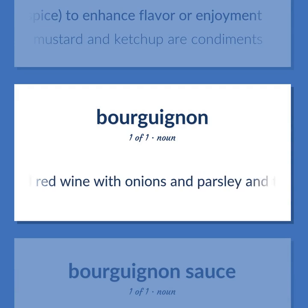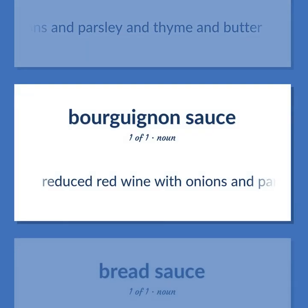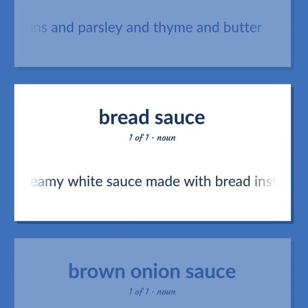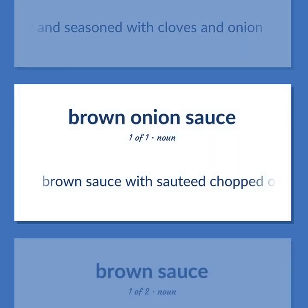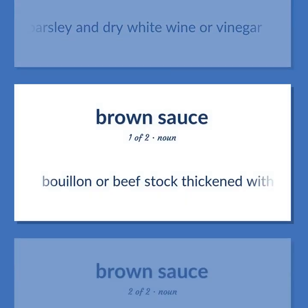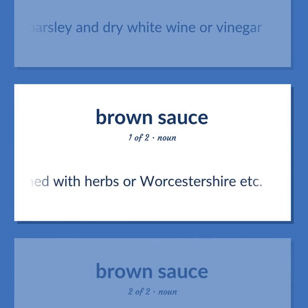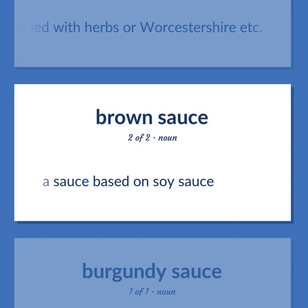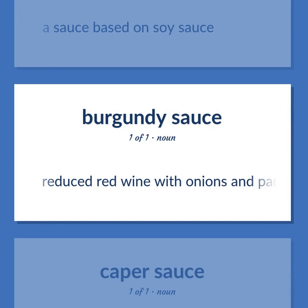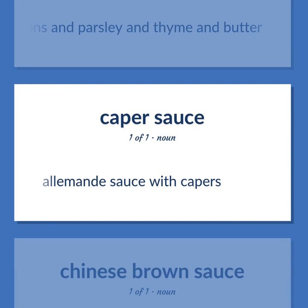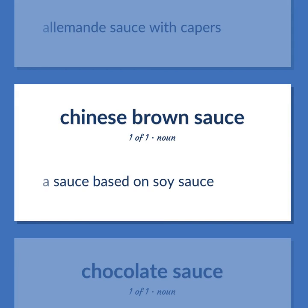Sauce types: Reduced red wine with onions and parsley and thyme and butter. Creamy white sauce made with bread instead of flour, seasoned with cloves and onion. Brown sauce with sautéed chopped onions and parsley and dry white wine or vinegar. Bouillon or beef stock thickened with butter and flour roux, variously seasoned with herbs or Worcestershire. A sauce based on soy sauce.